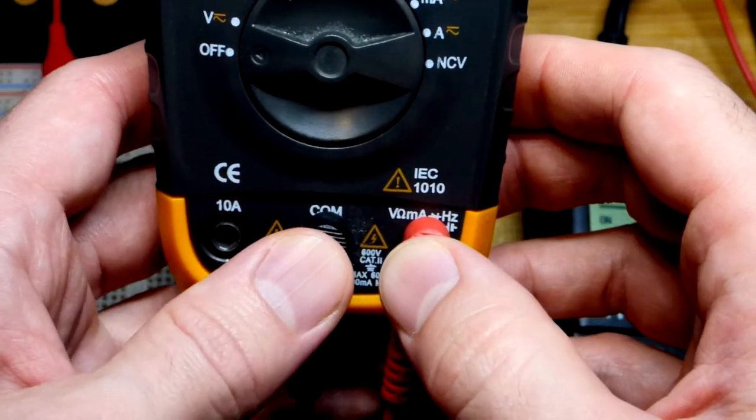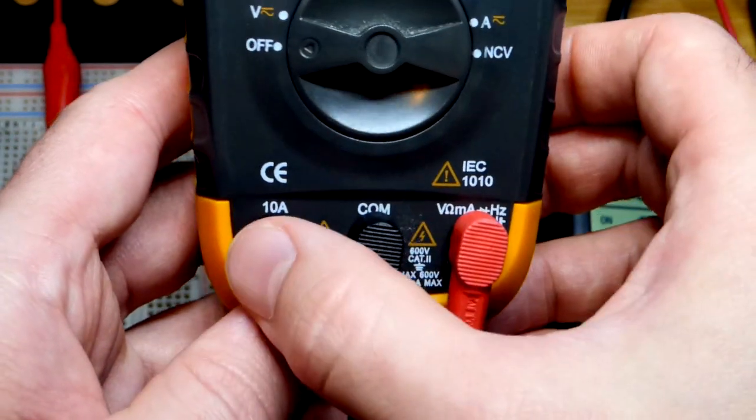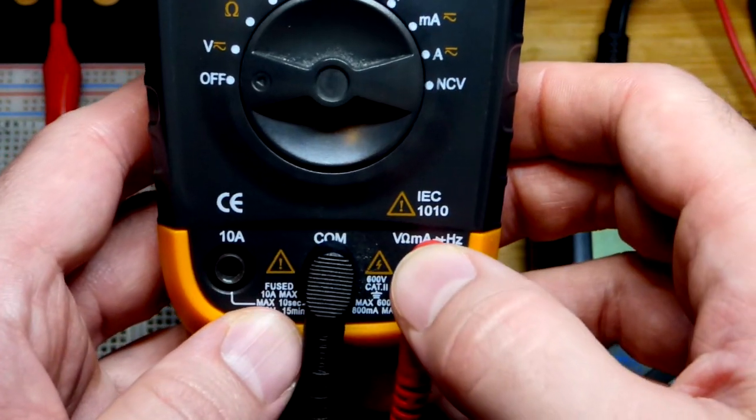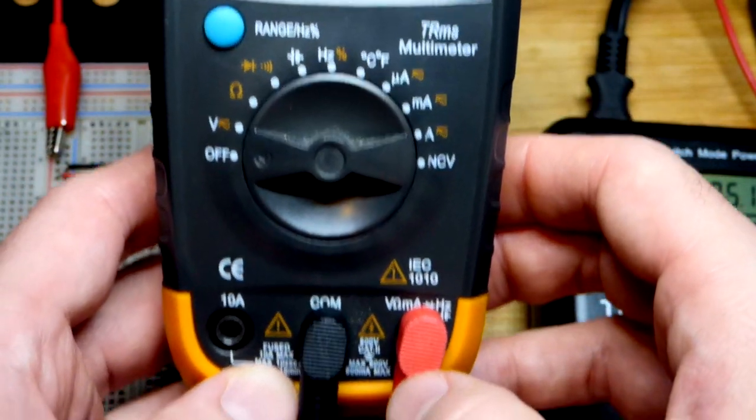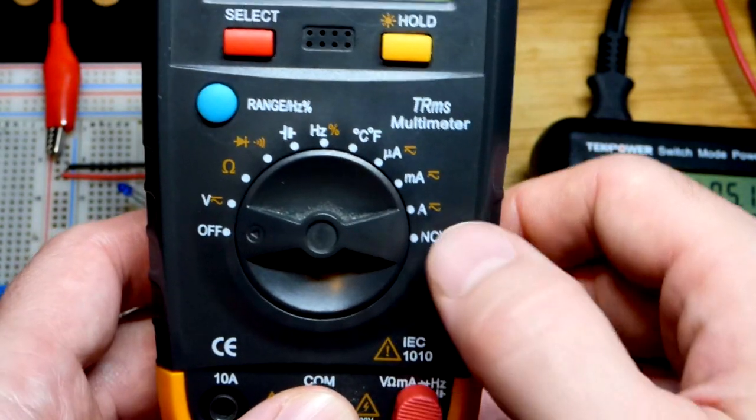We need to make sure the red probe and the black probe are in the right spot. For this meter, black probe is always at COM, red probe only moves for high current. We're not measuring high current, we're just in the milliamp range right there. We can leave the red probe there. Other multimeters, you may have to move one or the other probe.